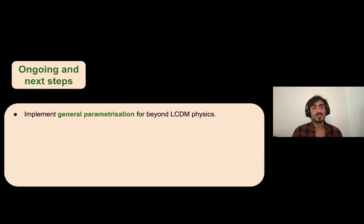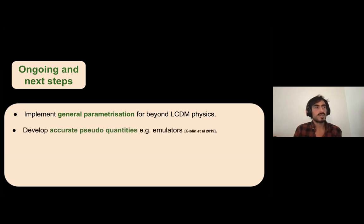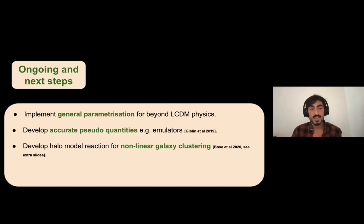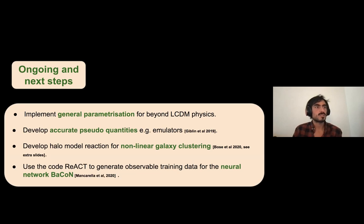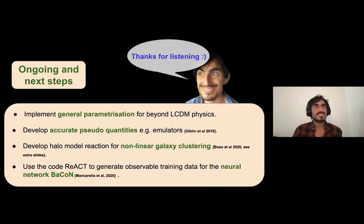For next steps: we want to consider general theories of gravity rather than specific ones, parametrizing them in a model-independent way. We want to develop corrections to achieve down to 1% accuracy, develop a model for galaxy clustering — the other main observable — and train the BACON code on actual observables rather than the power spectrum, then apply it to data as a first indication of whether there are hints of new physics, before proceeding to a full statistical analysis. Thanks for listening.